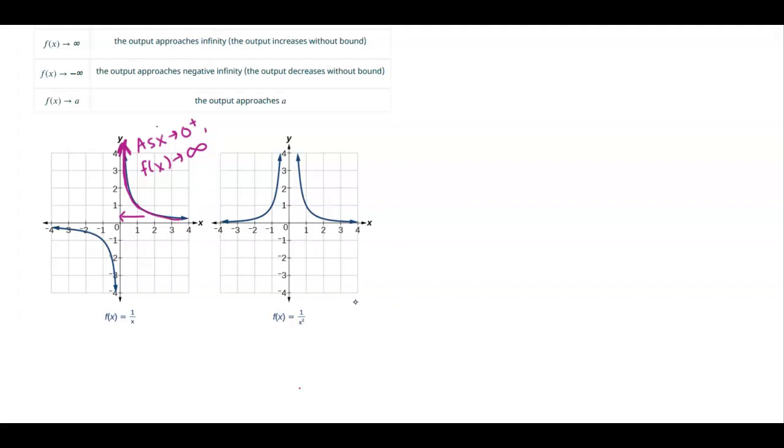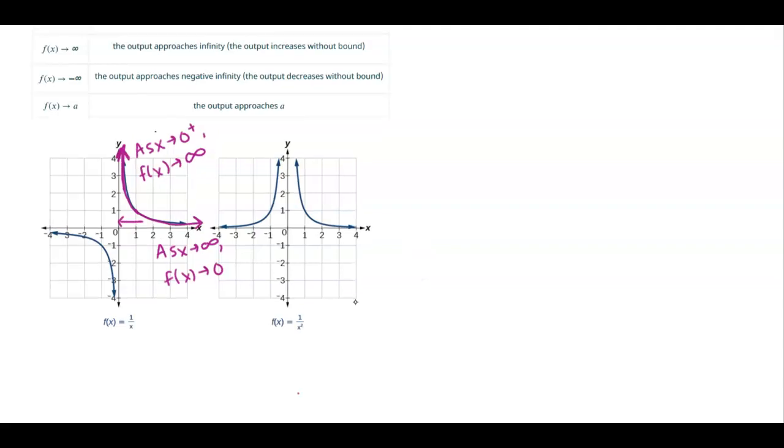On the other side, down here, we would then say as x goes to infinity, f of x gets really close to 0. Now it does get close to 0 from numbers bigger than 0. So you could also say from the right-hand side, but we don't really need that in case you're doing some further analysis with these in calculus.